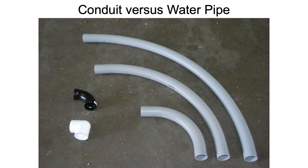The black one on the left is for wastewater here in the U.S. — drains from sinks, showers, and toilets. Since there is matter in the wastewater, the pipe does have a more gradual bend, but it would still be very difficult to pull a fiber optic cable through there.